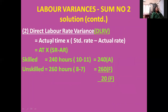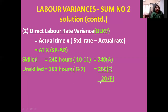For direct labor rate variance, we compare standard rate with actual rate within brackets, multiplied by actual time. Skilled: standard rate 10, actual rate 11, actual time 240 hours. Unskilled: standard rate 8, actual rate 7, actual time 260 hours. Do the calculations — the adverse amount is less than the favorable, so the resulting answer is 20 favorable.